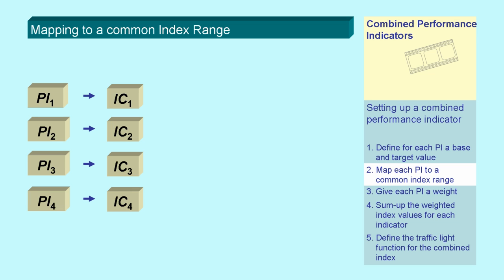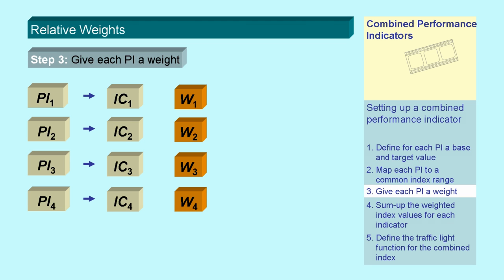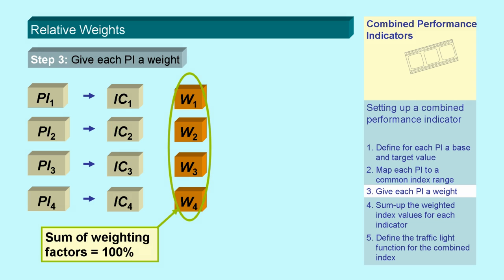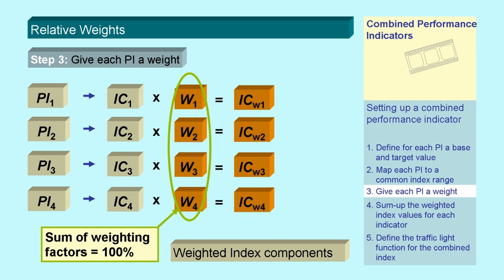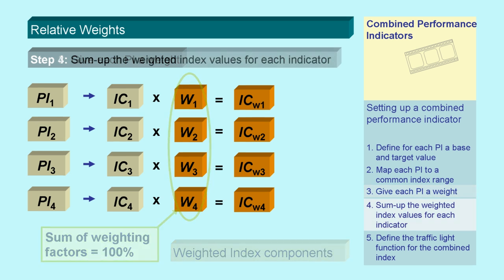As individual indicators might contribute with higher impact to the overall performance, we introduce weighting factors with the sum of all weighting factors resulting in 100%. We can then calculate the weighted index components.